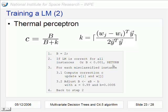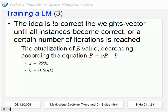But for all wrong classifications, we compute the correction c here and we update this weights vector and adjust this value of b. The idea, as I already said, is to correct the weights vector until all instances become correct or a certain number of iterations is reached.